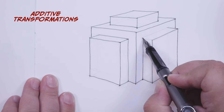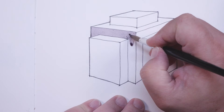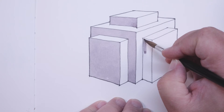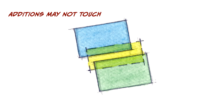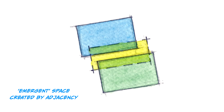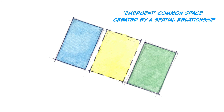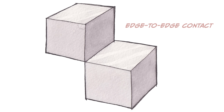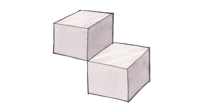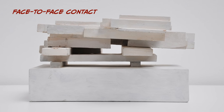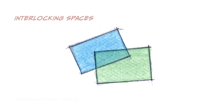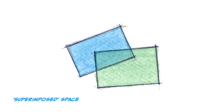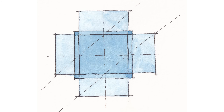Additive transformations occur when a form is transformed by the addition of elements to its volume. Additions may not touch — this is a relationship of two or more spaces that relate visually or conceptually but do not physically touch; I call these emergent spaces. In edge-to-edge contact, forms share a common edge and can move or pivot around it. In face-to-face contact, forms share a common face and can move or transform around it. In interlocking volumes, spaces interlock or overlap each other — by far the most used additive transformation.